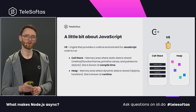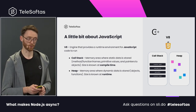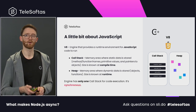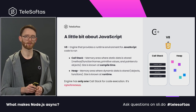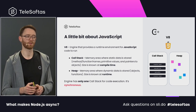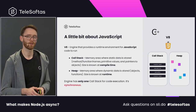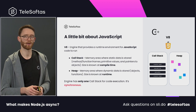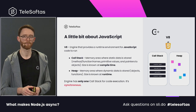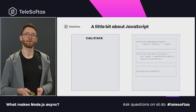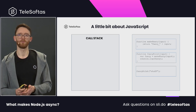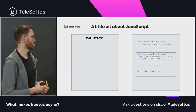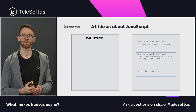One important thing to notice is that the V8 engine has only one call stack, meaning that JavaScript is synchronous — it can fulfill one thing at a time. Let's try to investigate how the call stack works in action.